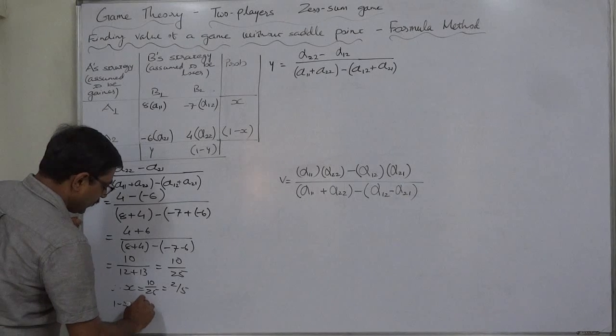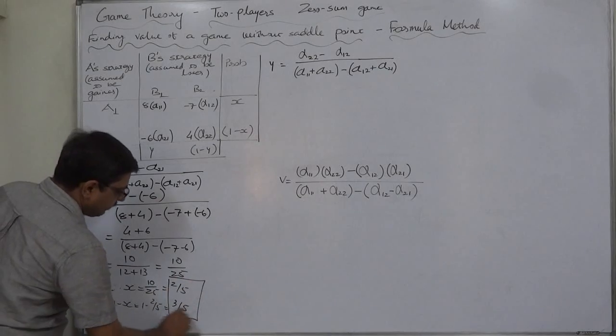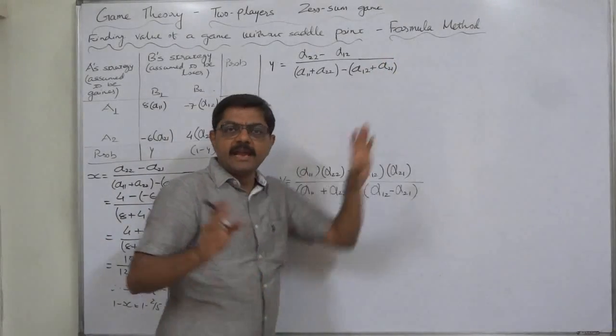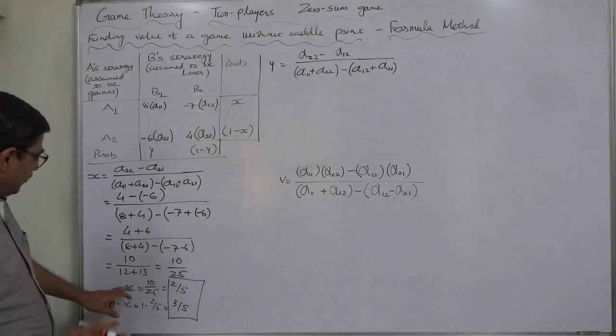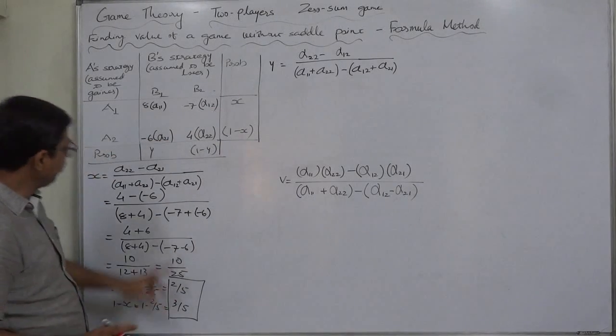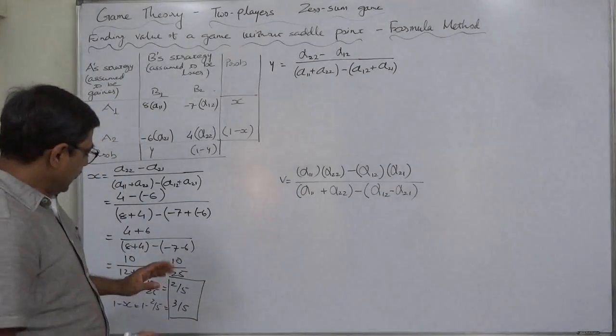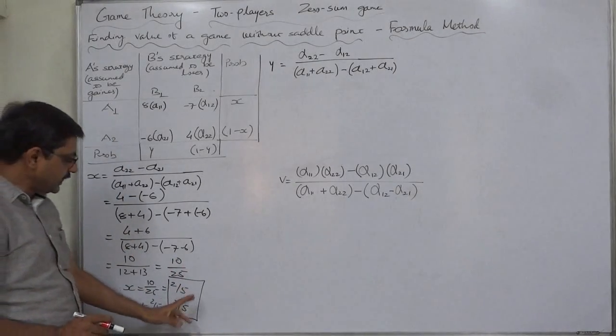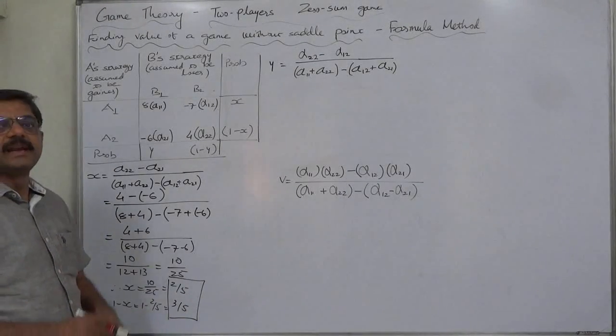And 1 minus X will be 1 minus 2 by 5 that is 3 by 5. This is the same case as we have already discussed by taking the algebraic method. I have deliberately taken the same case because we can compare the results. X 2 by 5. Probability of A using strategy A1 comes to 2 by 5 and probability of A2 comes to 3 by 5. The interpretation is A should use strategies A1 and A2 in the ratio of 2 is to 3 in the long run in random manner.